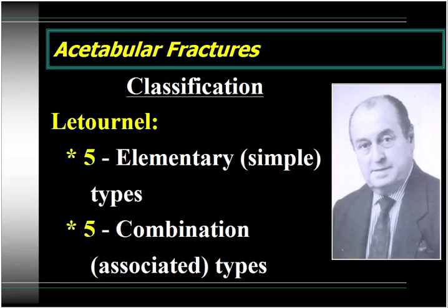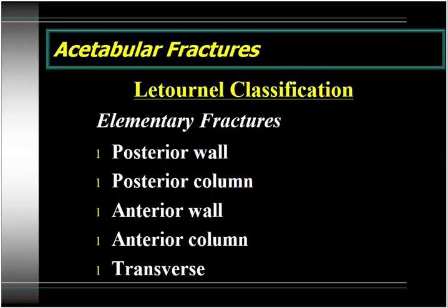This is Emile Letournel, the father of acetabular fracture surgery, the eminent French surgeon who passed away a few years ago. Letournel's classification scheme seems a little bit daunting at first because there are ten different types of acetabular fractures. However, it's very logically organized. There are five simple or elementary fractures and then five associated or combination-type fractures. The elementary fractures are the posterior wall, posterior column, anterior wall, anterior column, and the straight transverse fracture.